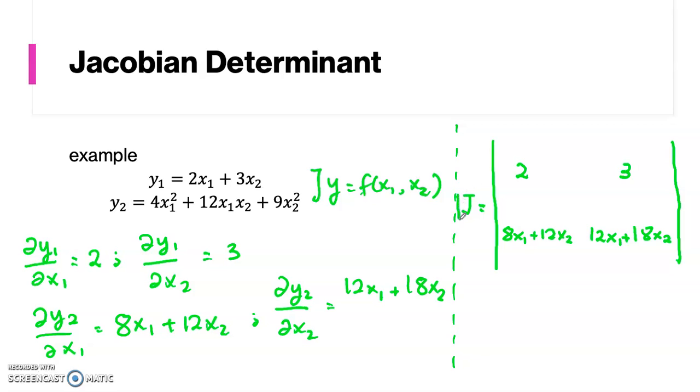And we try to find the determinant of the Jacobian matrix because we want to find the linear dependency between the system equation.